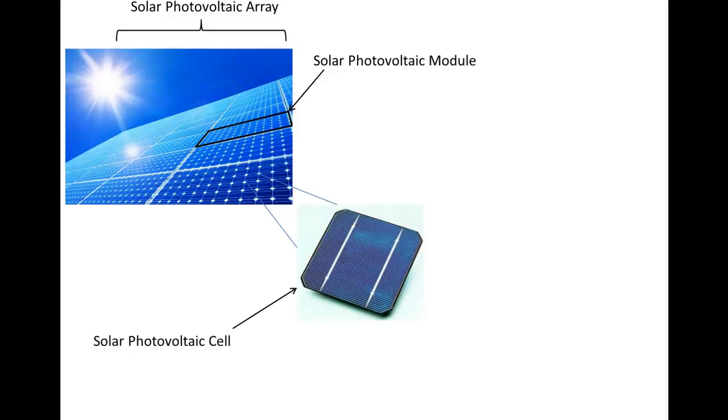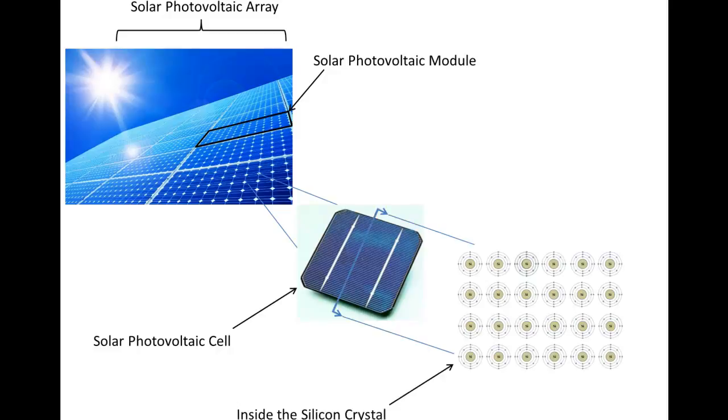Each module has individual cells, somewhere between 60 and 72 cells is common. If I were to cut that cell in half and look inside that cell at the silicon crystal, I would have a bunch of silicon atoms, each with four valence electrons.